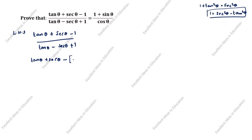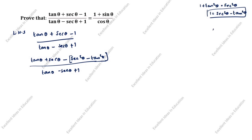Now we will write it here: secant squared theta minus tan squared theta, divided by tan theta minus secant theta plus 1. Next, this one we will split using the formula a squared minus b squared equals a plus b into a minus b.